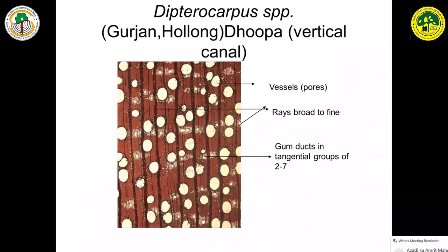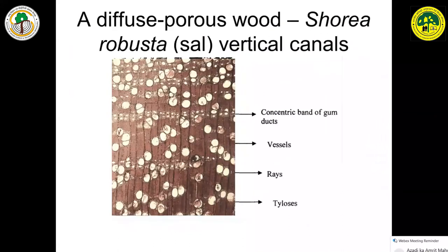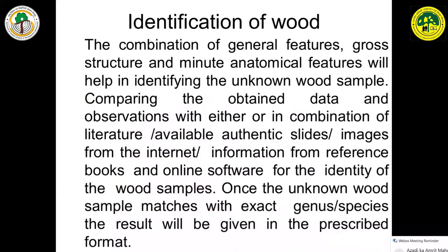Ripple marks are found in all Dalbergia and Pterocarpus genera. In some timbers, diagnostic characters are present — for example, all Dipterocarpus will have gum ducts. By looking at the gum ducts, we can tell a sample belongs to Dipterocarpus. In Gurjan, gum ducts are scattered; in Sal, they occur in tangential shell lines. The combination of general features, gross structure, and minute anatomical features will help in identifying the unknown wood sample.